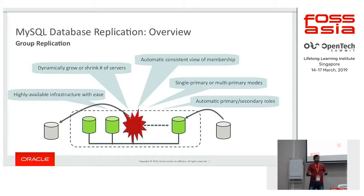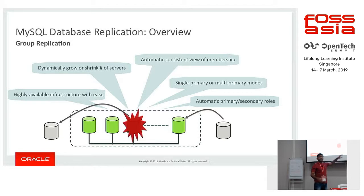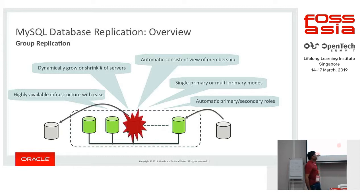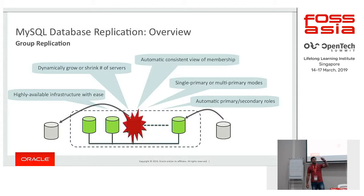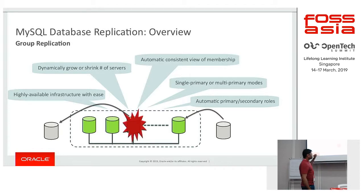Now coming to the third and most important MySQL replication type — group replication — which has improved a lot. In the previous replication setup we might need different scripts and utilities to provide failover and other activities. In group replication it is a highly available solution with infrastructure where members can grow and shrink dynamically, and the same consistent view is available to all members. We can have two different modes: single primary mode where only one member does read-write operations and all others read only, or multi-primary mode where all members do write operations with conflict detection handled automatically.